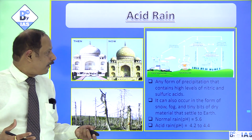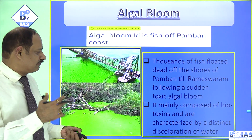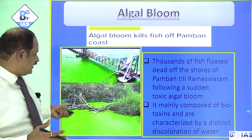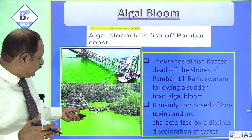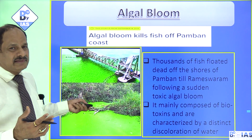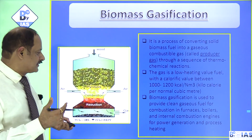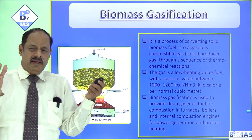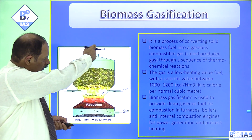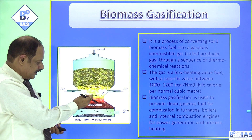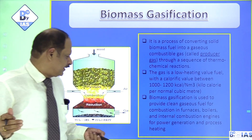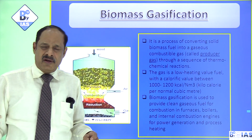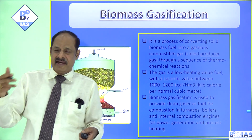Algal bloom has also been in the news — particularly the harmful algal bloom killing fish on the Pambam coast near Rameswaram, where the entire area got discolored and was releasing various toxins. Biomass gasification is another very important concept recently picked up by scientists. It involves converting solid biomass into gas through pyrolysis, combustion, and reduction. The gas produced is clean and can be used for combustion in furnaces or running turbines.